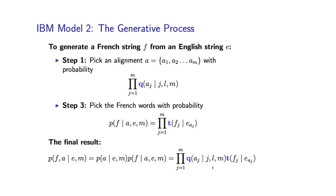To get some intuition, let's consider the generative process underlying this model. It's basically assuming that a French string f is generated from an English string e. We condition on e being some sentence — for example, 'the dog barks' — and we condition on the length of the French sentence m, for example m equals 3.